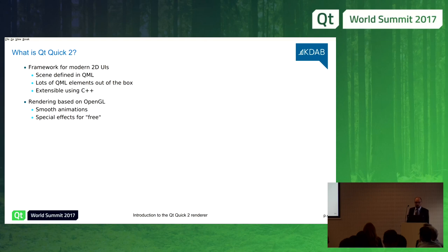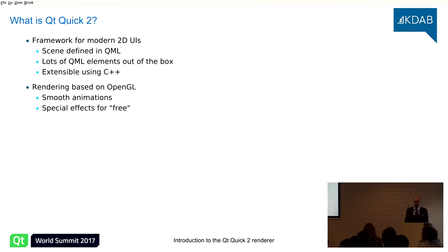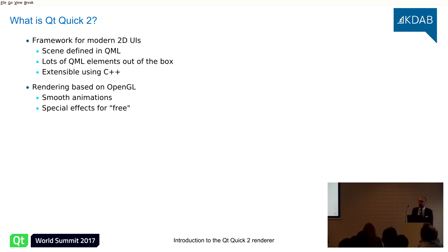I'll give a brief introduction to the Qt Quick 2 renderer. Qt Quick 2 is basically a framework to build 2D user interfaces. You build scenes in QML, which comes with many built-in elements, and it is extensible using C++. You can expose C++ objects into the QML scene and define new Qt Quick elements from C++. The rendering is based on OpenGL, which gives you smooth animations, special effects, and GPU acceleration.